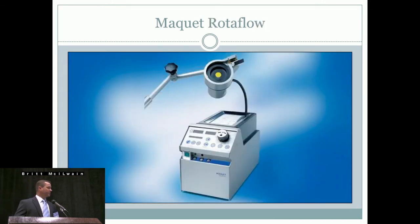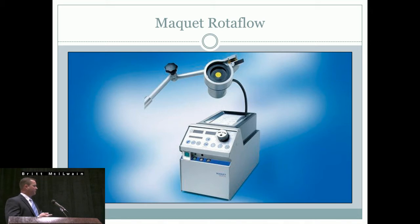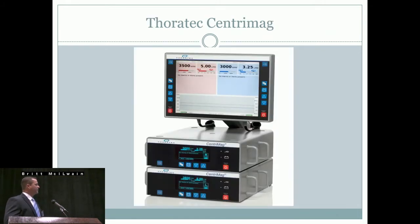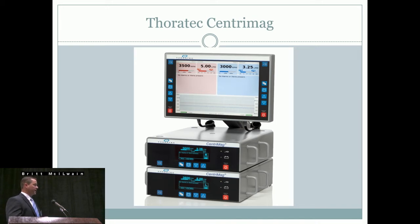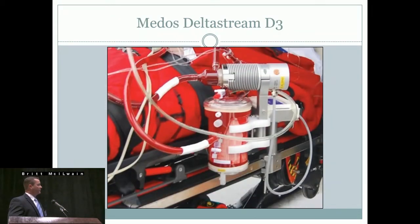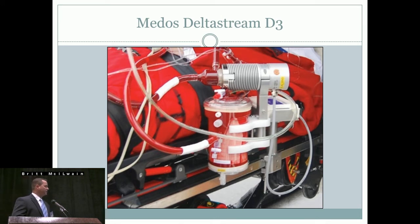Other equipment people use includes the Maquet Rotaflow, and it's important to note that both the Maquet and the Rotaflow have hand cranks so you can provide support during an emergency or disposable failure. We also have the CentraMag in-house, though we don't use it for ECMO transport. It has no hand crank, so you'd just need to take a backup controller. We like the CardioHelp because it has integrated interventions and safeties. The Medos Delta Stream is also a good option in Europe, though not yet available in the States.